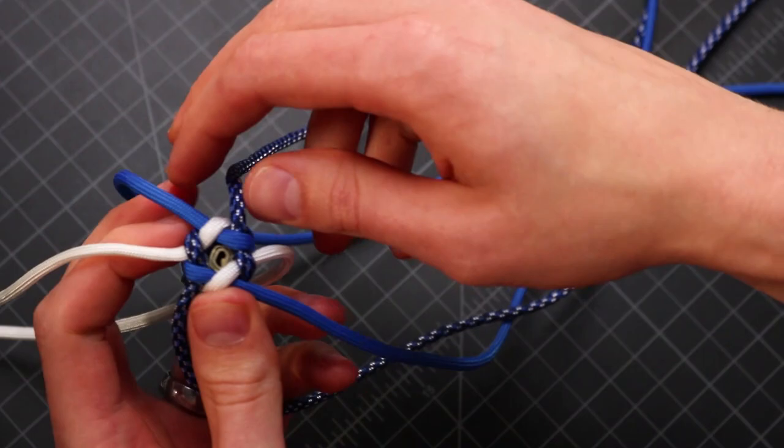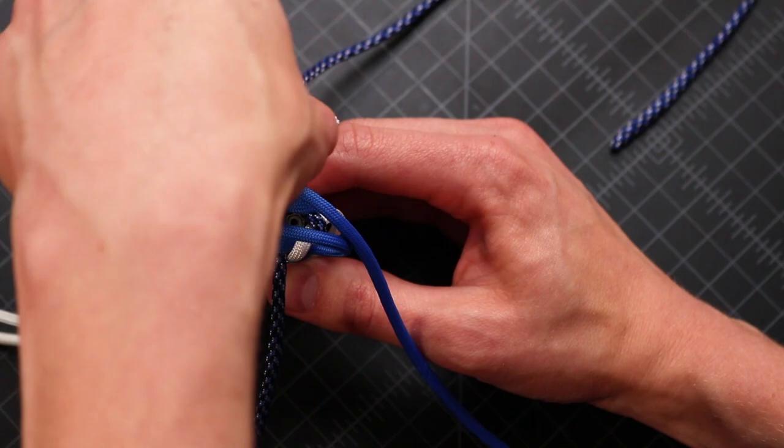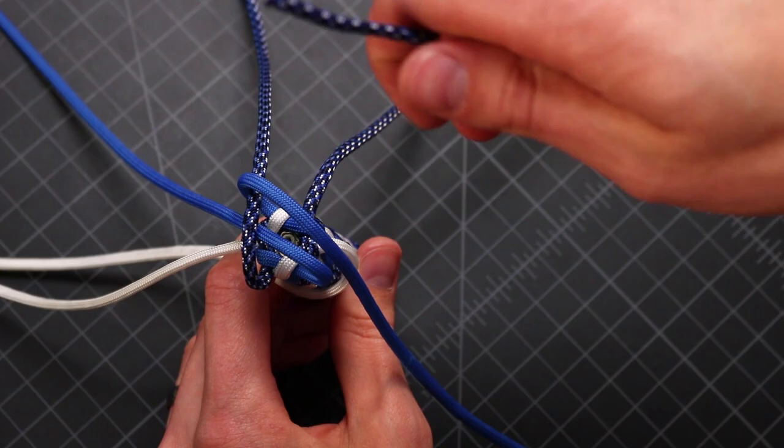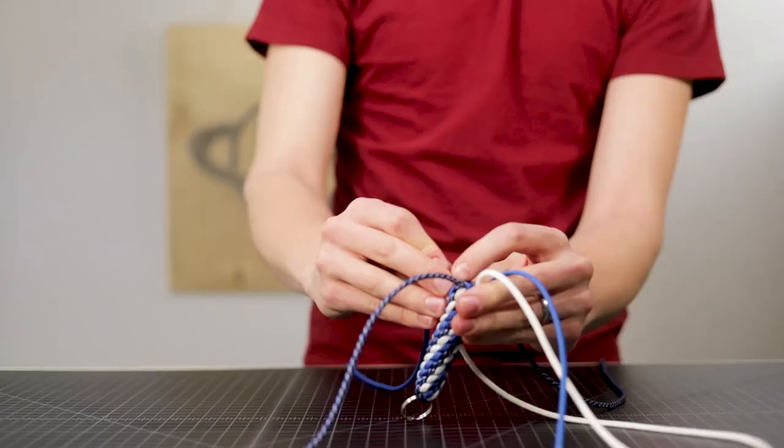Okay so two blue cords across the middle. This one goes over the first underneath the second. And same with this one over that first cord and underneath the second one. Then just cinch those down good and tight. So you could leave it at that if you want to.